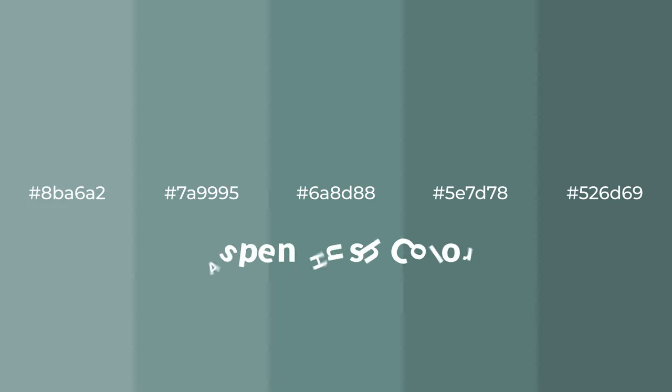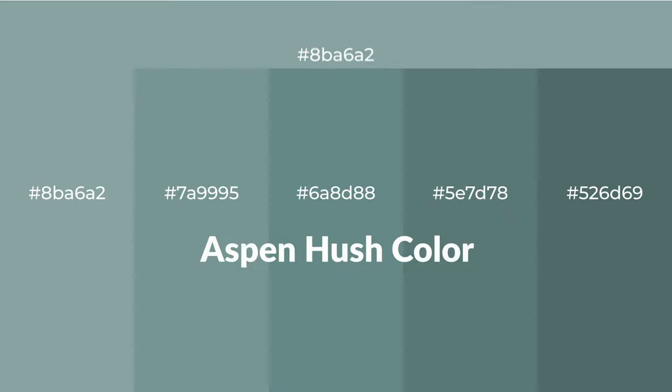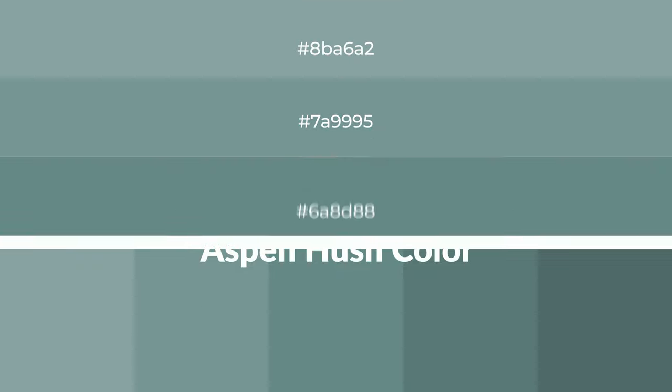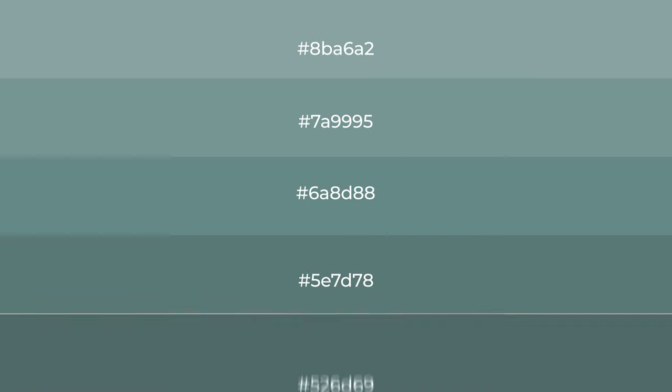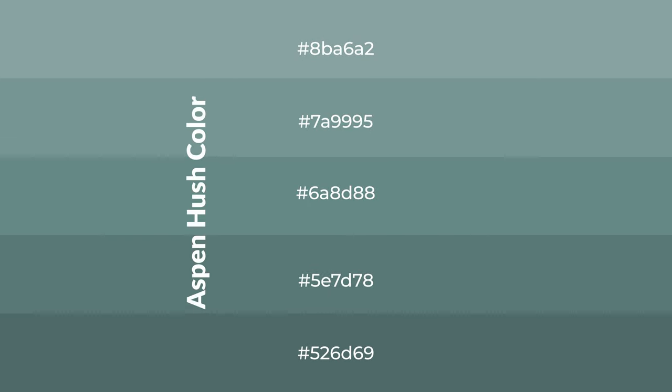Cool shades of Aspen Hush — a color with a green hue — for your next project. To generate tints of a color, we add white to the color. Tints create light and exquisite emotions. To generate shades of a color, we add black to the color. Shades are used in patterns, 3D effects, and layers, and they create depth and drama.